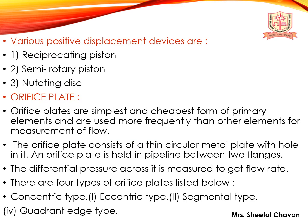Various positive displacement devices are the reciprocating piston, semi-rotary piston, and nutating disc. Orifice plates are the simplest and cheapest form of primary elements and are used more frequently than other elements for flow measurement. An orifice plate consists of a thin circular metal plate with a hole in it, held in a pipeline between two flanges. The differential pressure across it is measured to determine the flow rate.